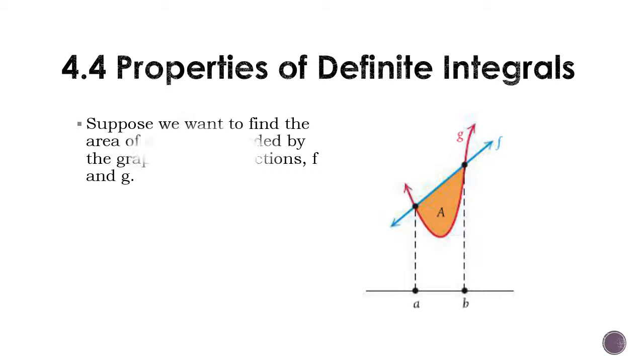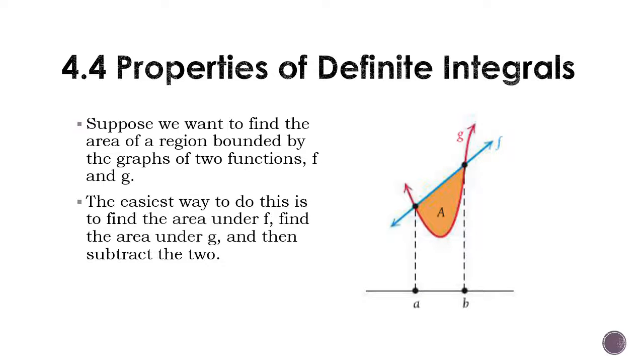Now, suppose we want to find the area of a region bounded by the graphs of two functions like these here. We have f and we have g, and notice neither of them are touching the x-axis. Not that important, but what we can do is we could find the area under f, which would be from the blue line down to the x-axis. We could find the area under g, which would be from the red curve down to the x-axis, and then subtract the two, and that would leave you with the shaded region.